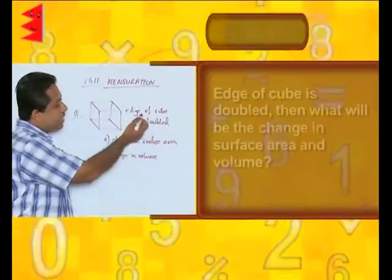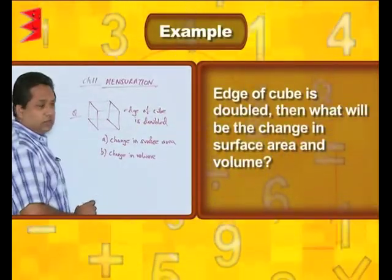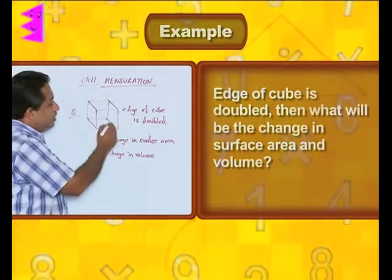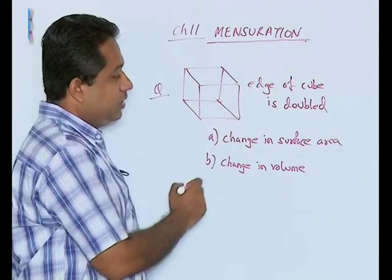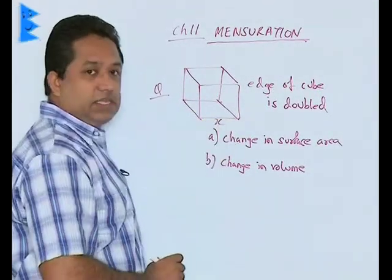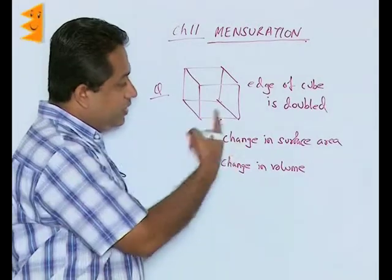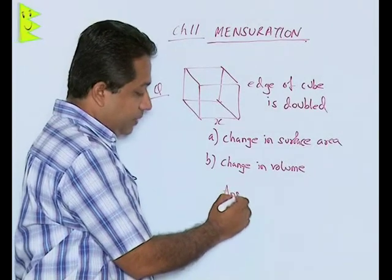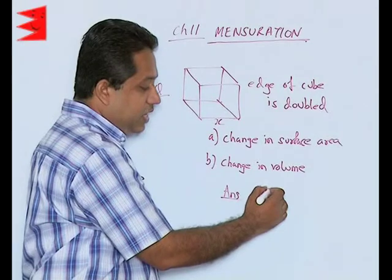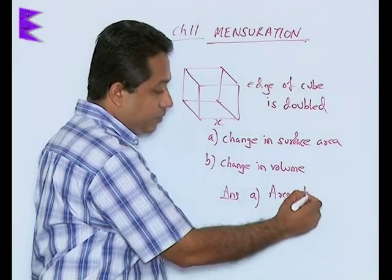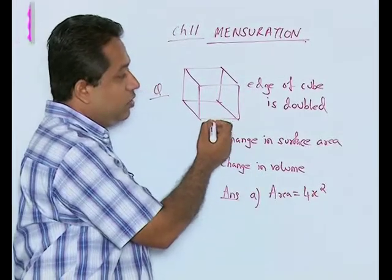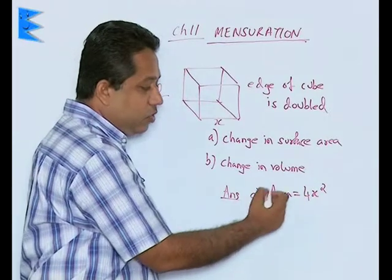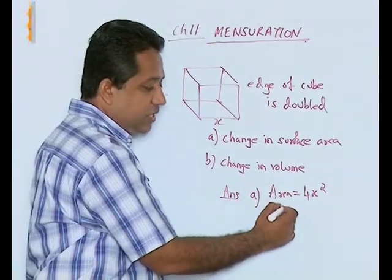This is a cube, and the question says if the edge of a cube is doubled, what will be the change in surface area and volume? Let the side of the cube be x. When doubled it becomes 2x. Originally the curved surface area is 4x² and the total surface area is 6x².